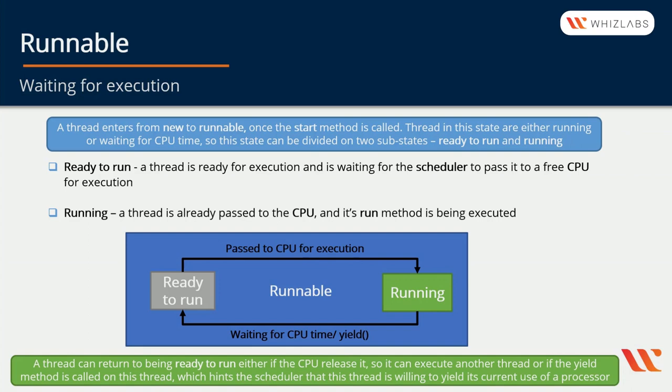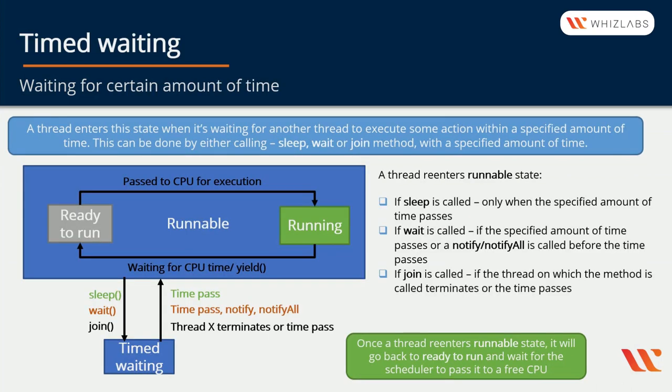Running is a thread that is already passed to the CPU and its run method is being executed. A thread can return to being Ready to Run either if the CPU releases it so it can execute another thread, or if the yield method is called on this thread, which hints the scheduler that this thread is willing to yield its current use of the processor. There are other ways that a thread can be placed waiting for CPU time — let's see them by looking at other states, for example Timed Waiting.